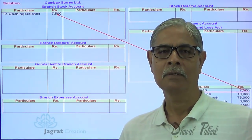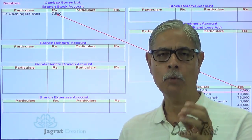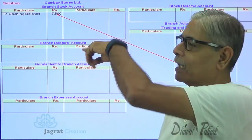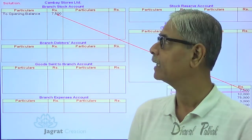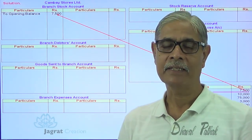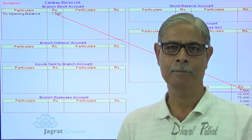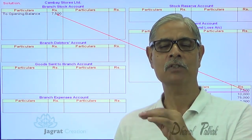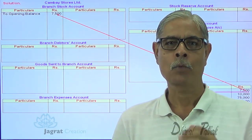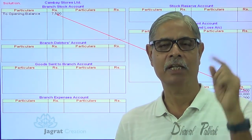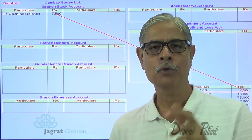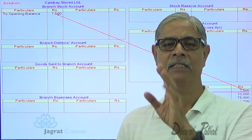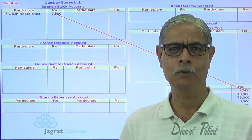The opening stock is valued at an invoice price since the branch stock account is prepared at an invoice price. This stock has a profit element. That stock was unsold in the last year, so the profit is unrealized — it is identified as stock reserve. For example, if 100 is the cost, 25 is the profit added, so 125 is the invoice price. For an opening stock of 7,500, the profit element is 1,500.